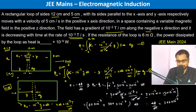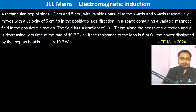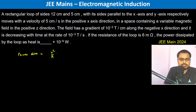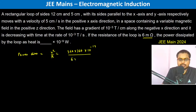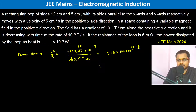Now, the power dissipated by the loop is P equals V squared by R. So we have 360 into 360 into 10 to the power minus 14, divided by R which is 6 into 10 to the power minus 3 ohm. That gives 216 into 100 into 10 to the power minus 14 plus 3, which is 10 to the power minus 11 — so 216 into 10 to the power minus 9 watts.